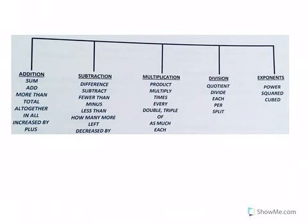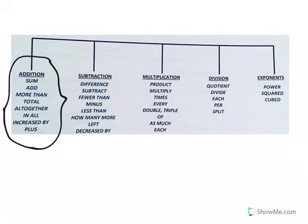Now many of these words you've seen before and we use in class, but this is a good chart to show us some of the different vocabulary terms you can use for the different kinds of math that we do. If you're looking at addition, you might say the sum, or add, or three more than five, right? You add those together. The total of three and five. Three and five all together. In all, three increased by five. Three plus five.